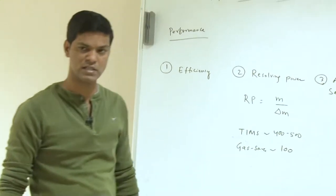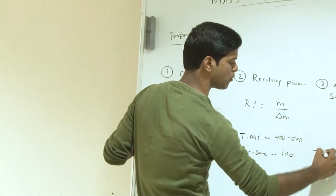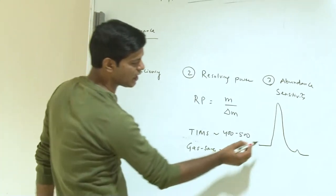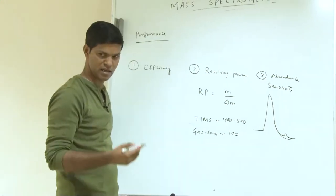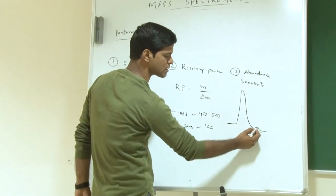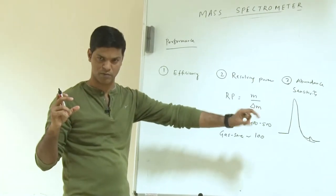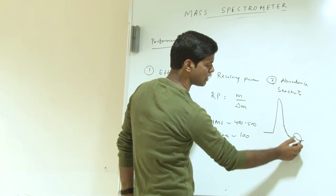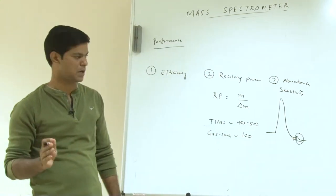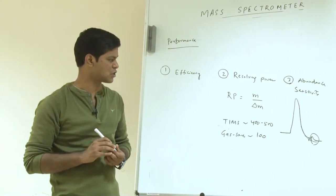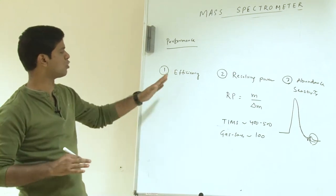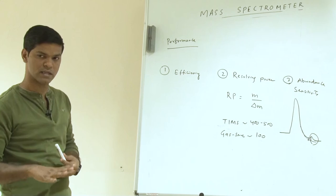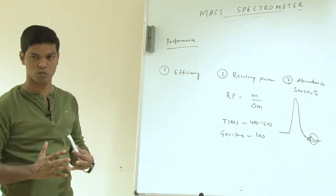The other important part is abundance sensitivity. Let us say you have two adjacent masses, one with a very high abundance and the next one with very low abundance. The tailing of the big isotope is going to influence the total signal of the isotope with the lower signal. The abundance sensitivity of the instrument decides whether this tailing can be minimized and the signal-to-noise ratio is better or lower. When you are looking for a mass spectrometer, you probably want to know how good it is in terms of efficiency, resolving power, and abundance sensitivity. These factors decide the quality of that mass spectrometer. Thank you.